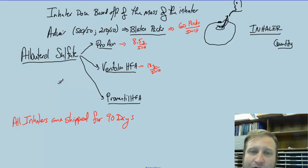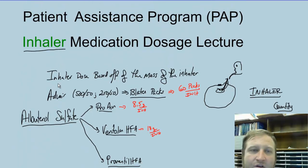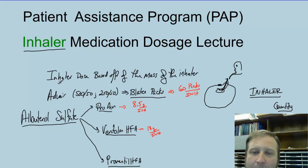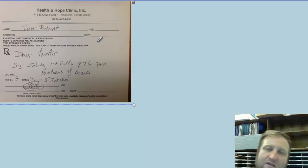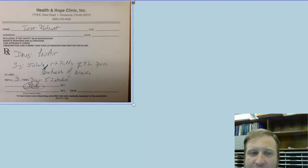That gives a brief overview of inhalers. This is our second video that involves patient assistance programs and dosing, and hopefully it's all coalescing and making sense. We're going to continue on doing some practice prescriptions. So notice here we have a drug — it says ProAir. ProAir is definitely the most common inhaler that we obtain for our patients through patient assistance programs.